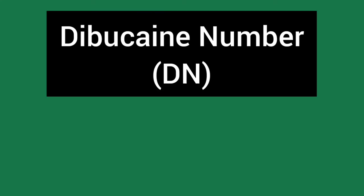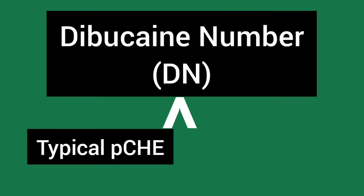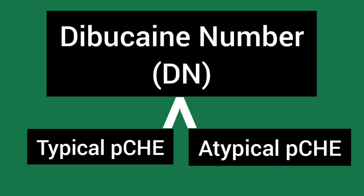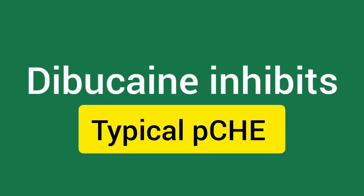The Dibucaine number is used to differentiate individuals with normal plasma cholinesterase enzymes from those with abnormal, meaning atypical, plasma cholinesterase enzyme. This can be done due to the fact that dibucaine, which is a local anesthetic, inhibits the normal plasma cholinesterase enzyme substantially greater than that of the atypical or mutant plasma cholinesterase enzyme.